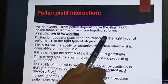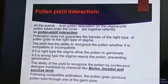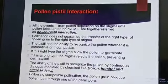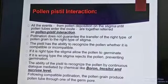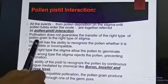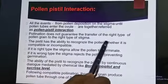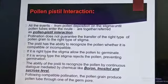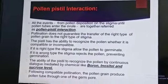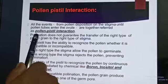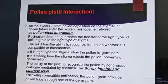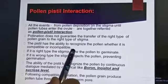Pollination does not guarantee the transfer of the right type of pollen grains to the right type of stigma — different types of pollen grains may go on different stigmas. But if it is the correct pollen grain on the proper stigma, then it will follow the fertilization process. The pistil has the ability to recognize the pollen whether it is compatible or incompatible, and it is decided by the pistil whether to allow the pollen to germinate on the stigma.